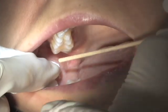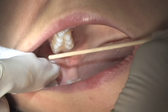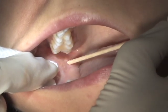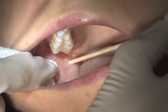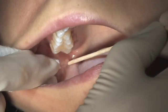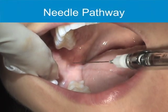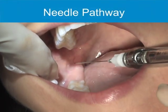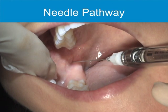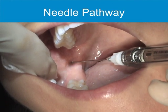Another good landmark: if you have your finger in the depth of the coronoid notch, look at the top of your finger — usually the insertion site is approximately adjacent to the top of that finger. For this injection, the barrel of the syringe should be over the opposite premolars, and is parallel to and above the mandibular occlusal plane.